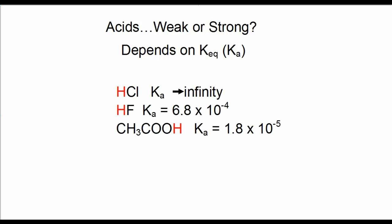Here are three acids: HCl, HF, and CH3COOH. They're called, respectively, hydrogen chloride or hydrochloric acid, hydrofluoric acid, and acetic acid. You see that the KAs for these acids vary. Ka for HCl approaches infinity. The Ka for HF is slightly larger than that for acetic acid.